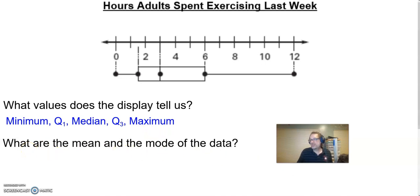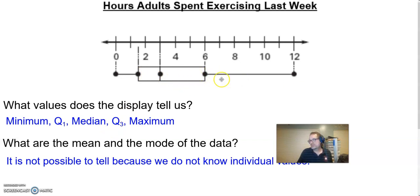When we're asked to find the mean and the mode of this data, I can't. I have no idea where the average is. I have an idea that there's some big numbers and some little numbers, but I don't know where they are and I don't know which of these values repeated the most because I do not know the individual values.